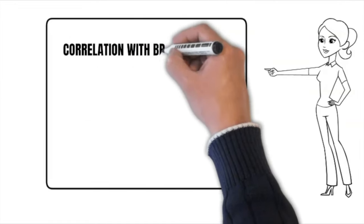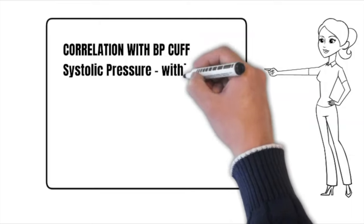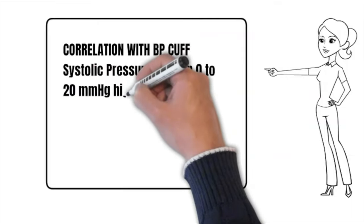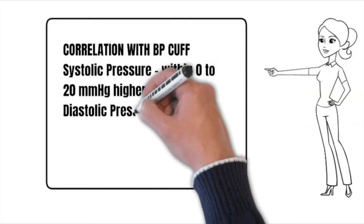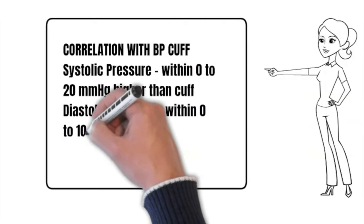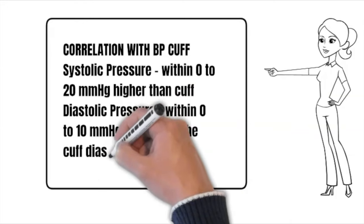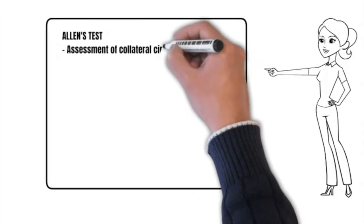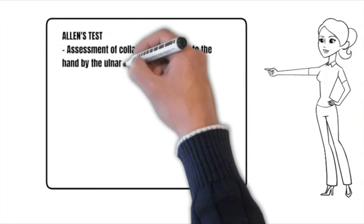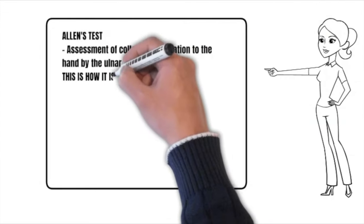Correlation with blood pressure cuff: systolic pressure within 0 to 20 mmHg higher than the cuff, diastolic pressure. Allen's test is the assessment of collateral circulation to the hand by the ulnar artery.